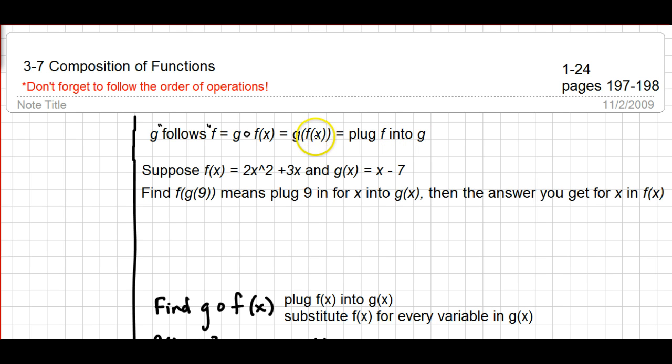So what you'll do in either case is you'll plug F into G. The only exception to that would be if there's a number in place of X, and that's like what we're gonna see in our first example. So they give you two functions, F of X and G of X, and they say find F of G of nine.